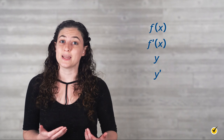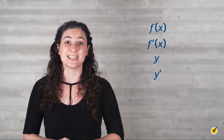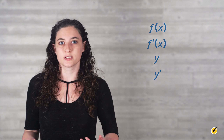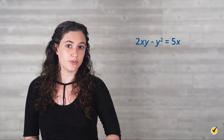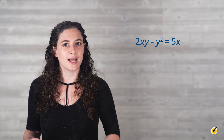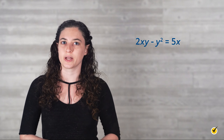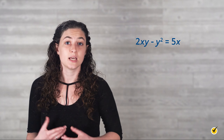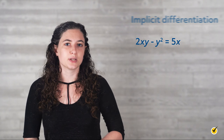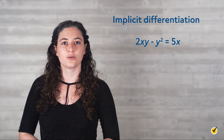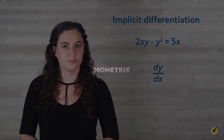Sometimes, though, you may need to take the derivative of a function that is not in this format. For example, the relation 2xy minus y squared equals 5x features multiple y's and cannot be rearranged to the regular y equals format. Even so, using a process called implicit differentiation, we can find the derivative dy over dx.